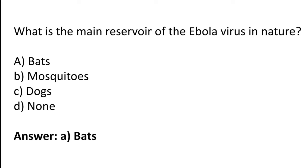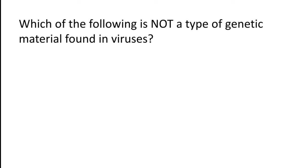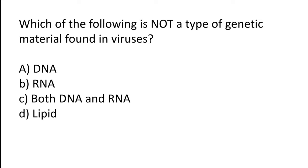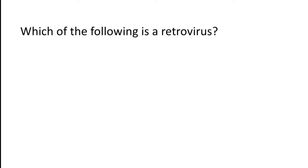What is the main reservoir of the Ebola virus in nature? Options: Bats, Mosquitoes, Dogs, None. The correct answer is option A — Bats is the main reservoir of the Ebola virus in nature. Which of the following is not a type of genetic material found in viruses? Options: DNA, RNA, Both DNA and RNA, Lipid. The correct answer is option D — Lipid is not a type of genetic material found in viruses.